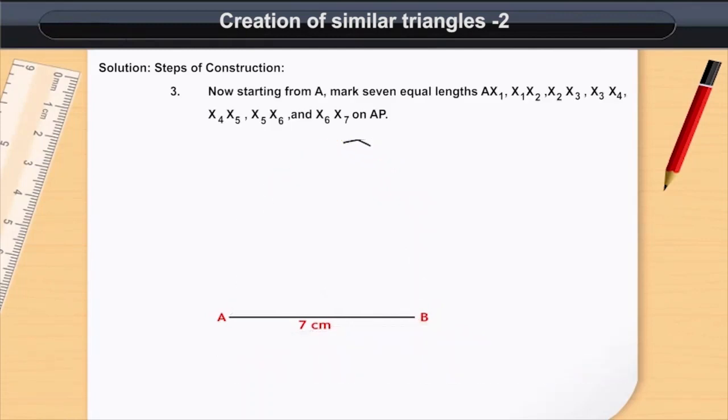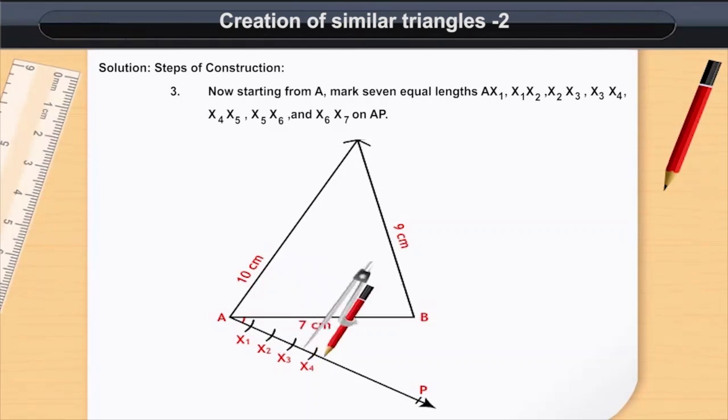Now, starting from A, mark 7 equal lengths: X1, X2, X3, X4, X5, X6, and X7 on AP.